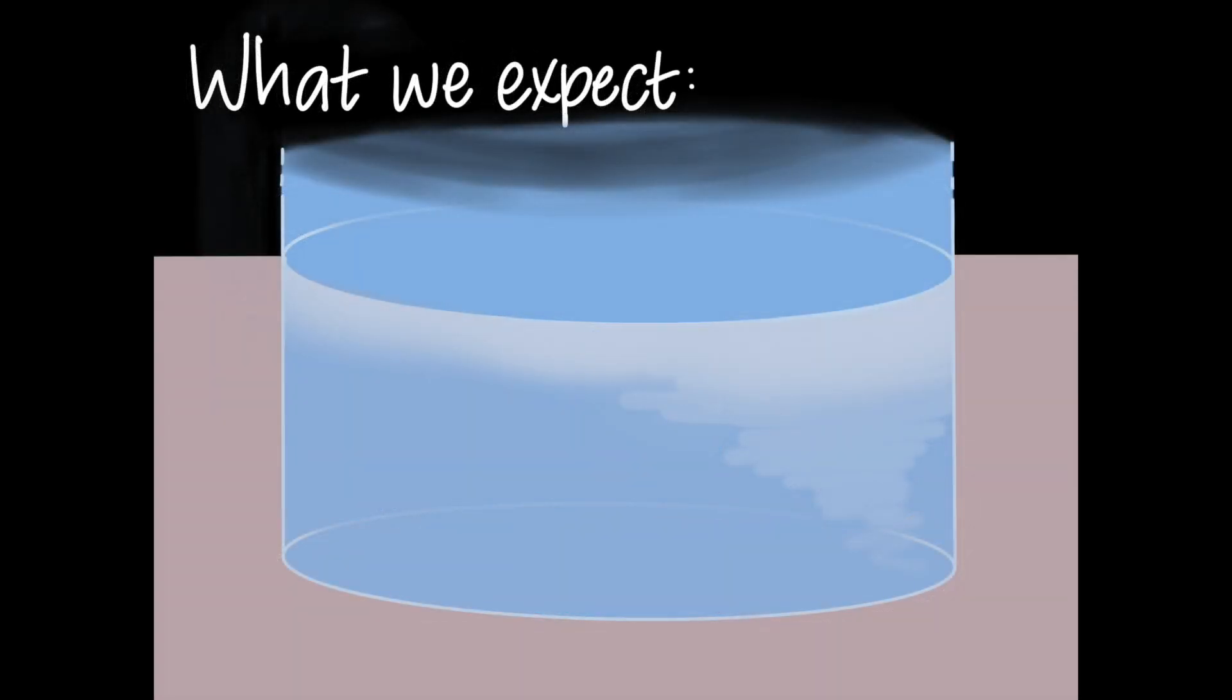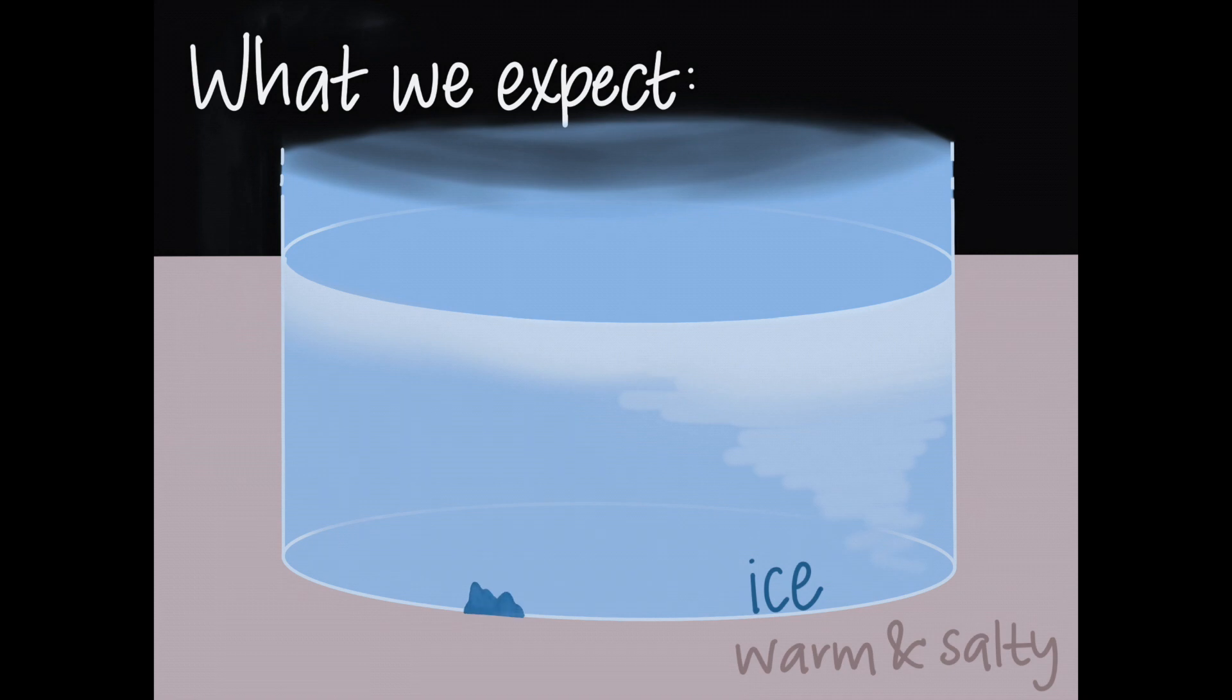In fact, if we took a close-up of the ice inside of this warm, salty water, we would see these very dramatic, buoyant, or light plumes coming off the bottom of the glacier that look a little bit like this.